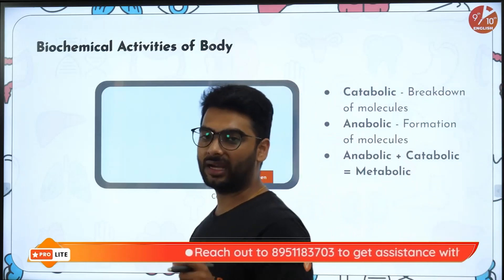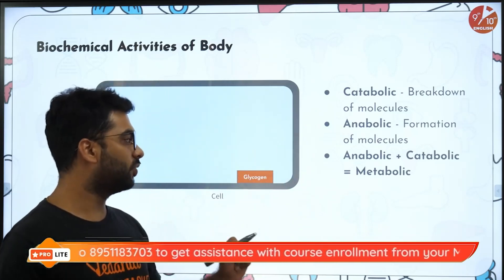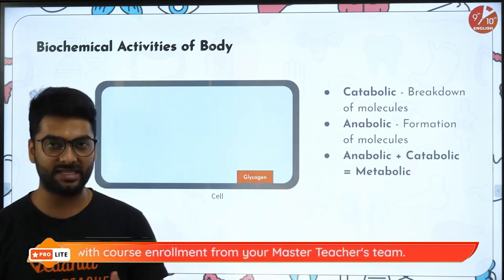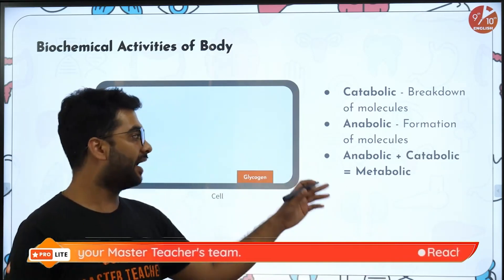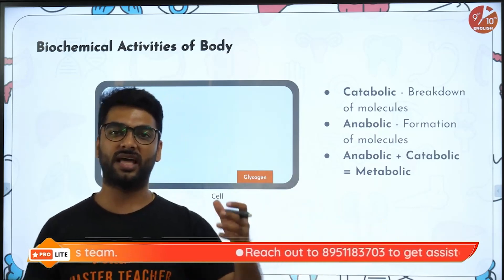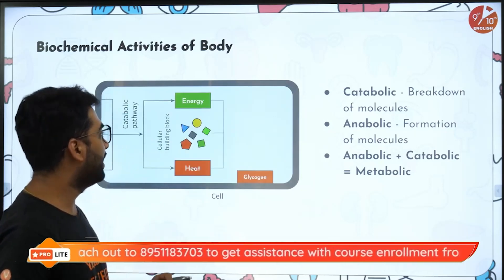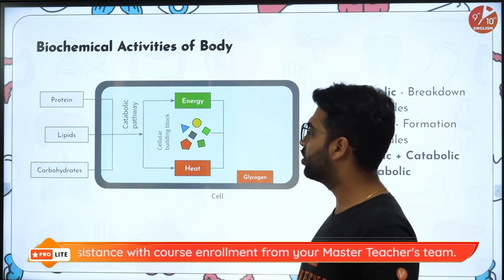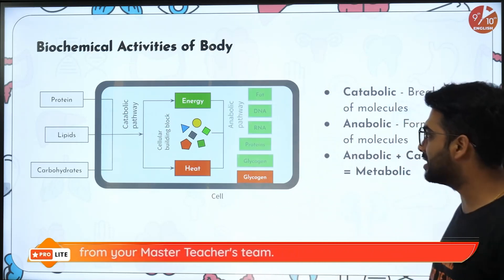Biochemical activities of the body are catabolic, which break down the molecules, and anabolic, which make the molecules. Both catabolic and anabolic sum up to form metabolic activities in the body. Catabolic is breakdown — like glucose breaking down to form energy — and anabolic is formation of molecules, like ADP plus inorganic phosphate making ATP. Carbohydrates break down to give you energy — that is catabolic — and when ADP plus IP make ATP, that is anabolic.